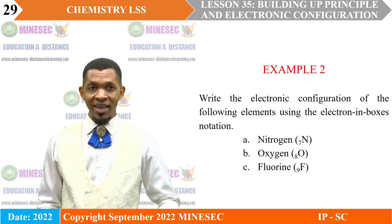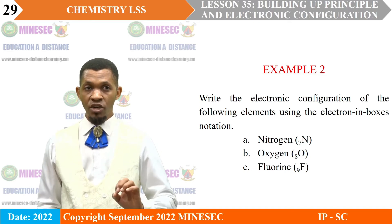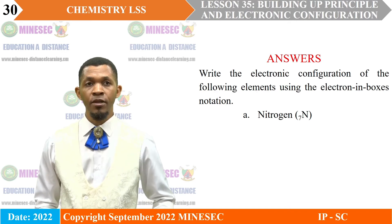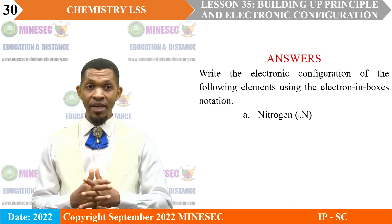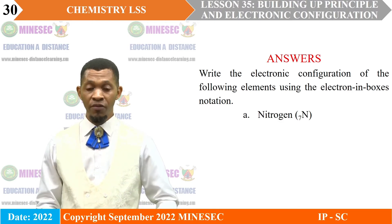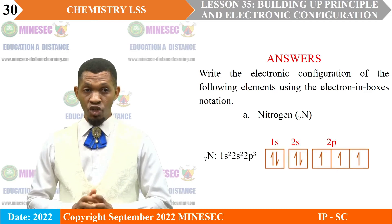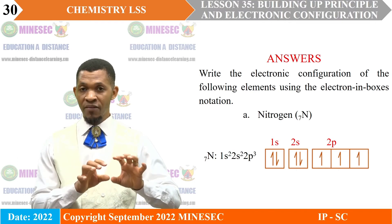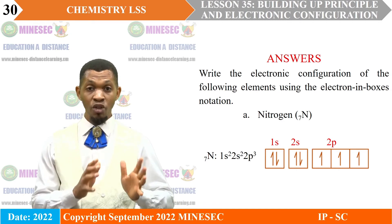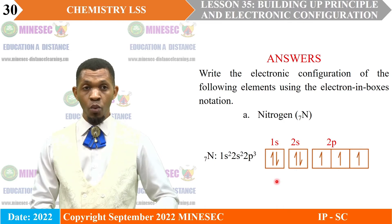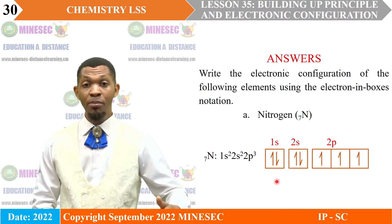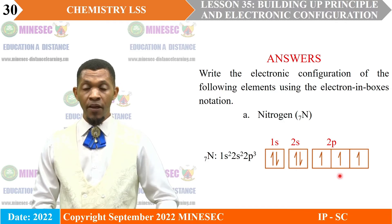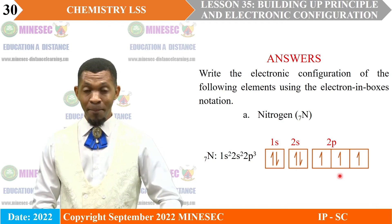Example 2: Write the electronic configuration of the following elements using the electron-in-boxes notation. A. Nitrogen. The electronic configuration of nitrogen according to the SPDF notation is 1s², 2s², 2p³. Feeding these electrons into boxes representing orbitals: the two electrons in the 1s subshell are represented by two arrows, one pointing up and the other pointing down; same for the 2s; and the three electrons in the 2p subshell are represented by arrows pointing up, because the 2p subshell is half-filled and the spins are parallel.